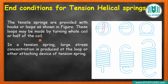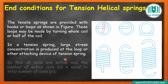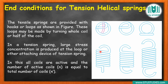Due to the loops or hooks, large stress concentration is produced at those locations. Stress concentration occurs at the hook or loop because the shape becomes irregular suddenly. As you may have studied in the fatigue loading chapter — stress concentration occurs where a regular shape suddenly becomes irregular. So these hooks and loops produce large stress concentration.